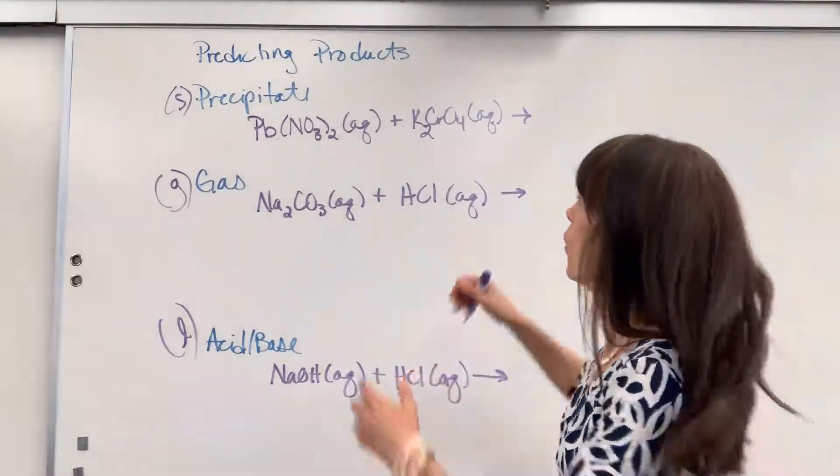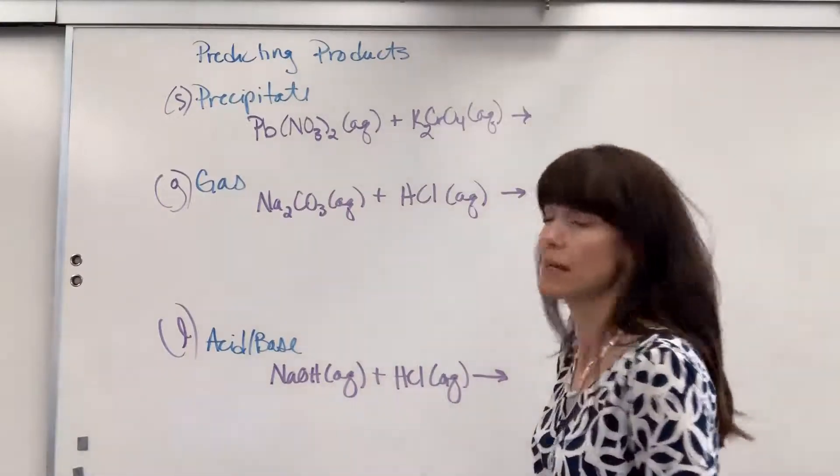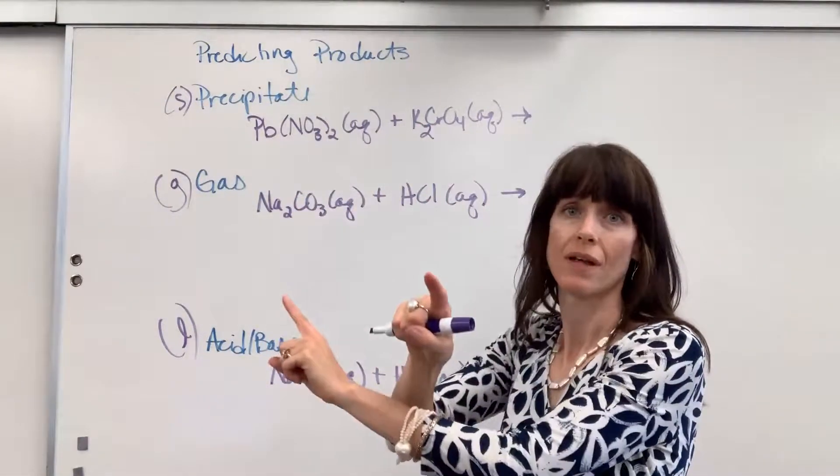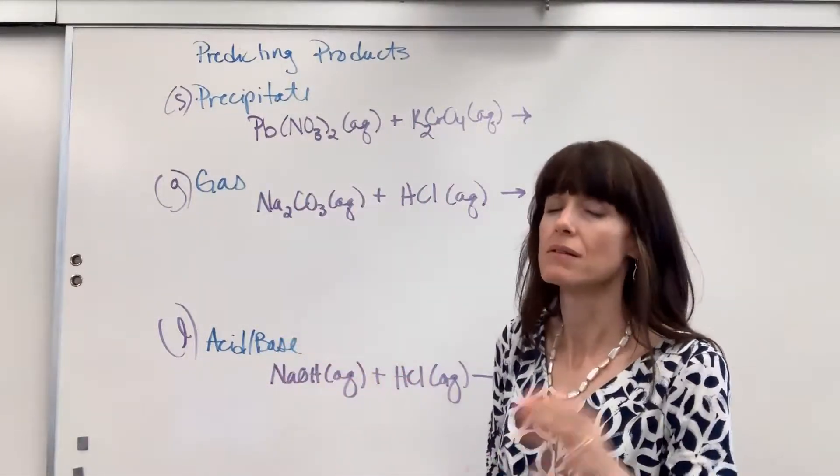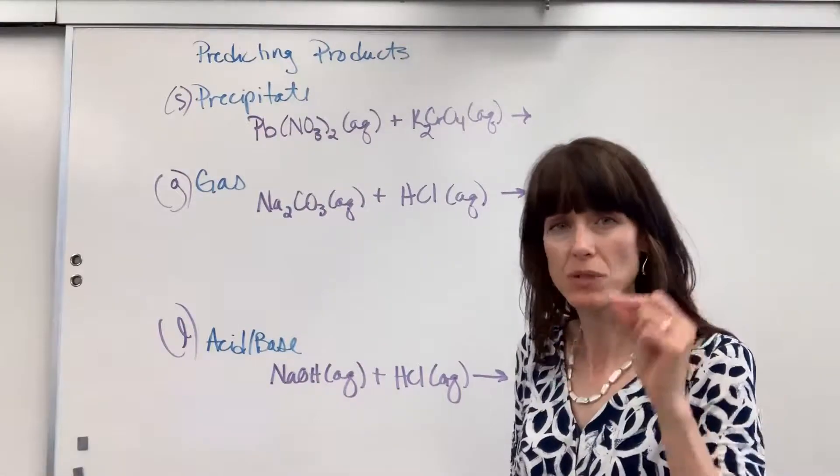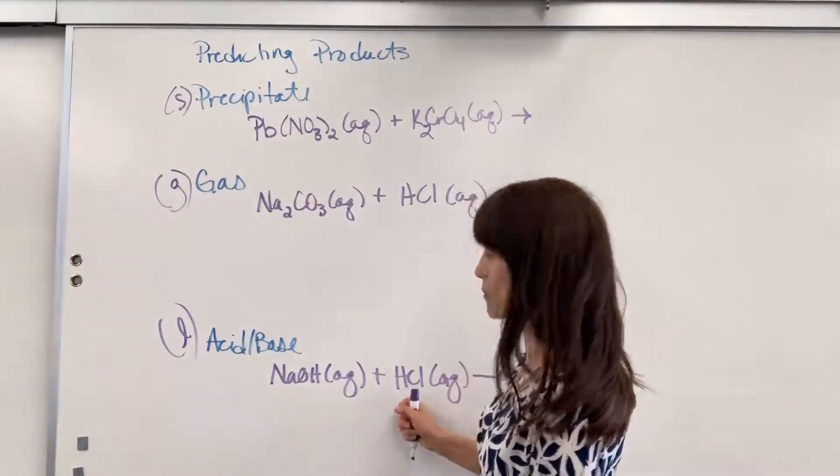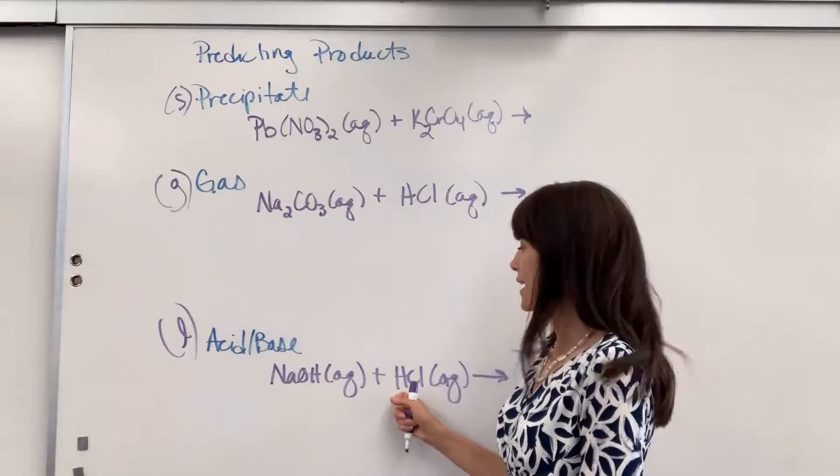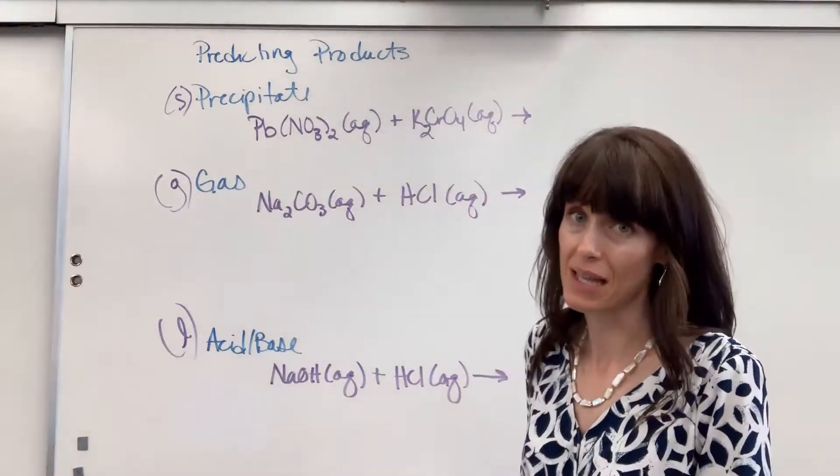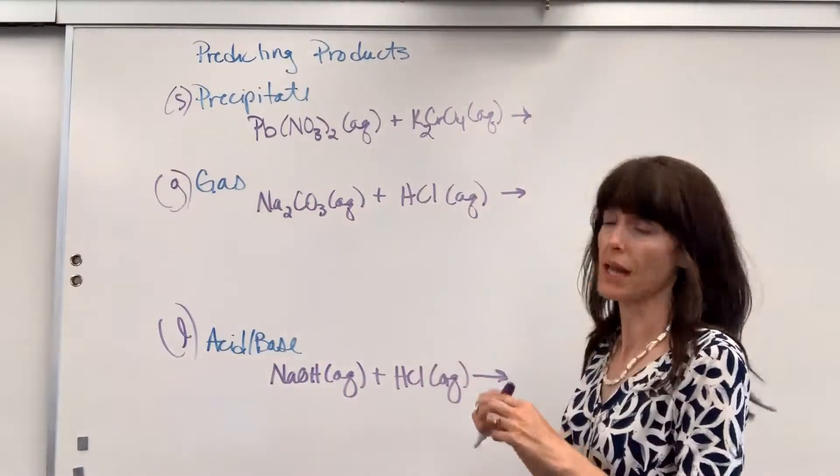Let's do this together. When you have your double replacement reactions, you're going to switch the metals. When I say metal, let's be even more particular and say switch the cations because, for example, here with hydrochloric acid, hydrogen is not a metal, but it is a cation. You're going to switch the cations.